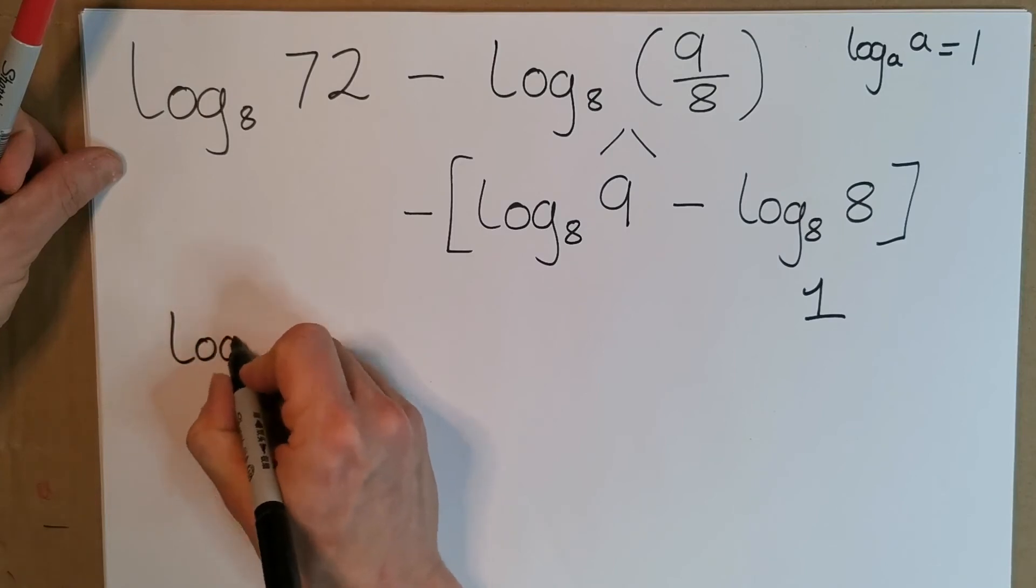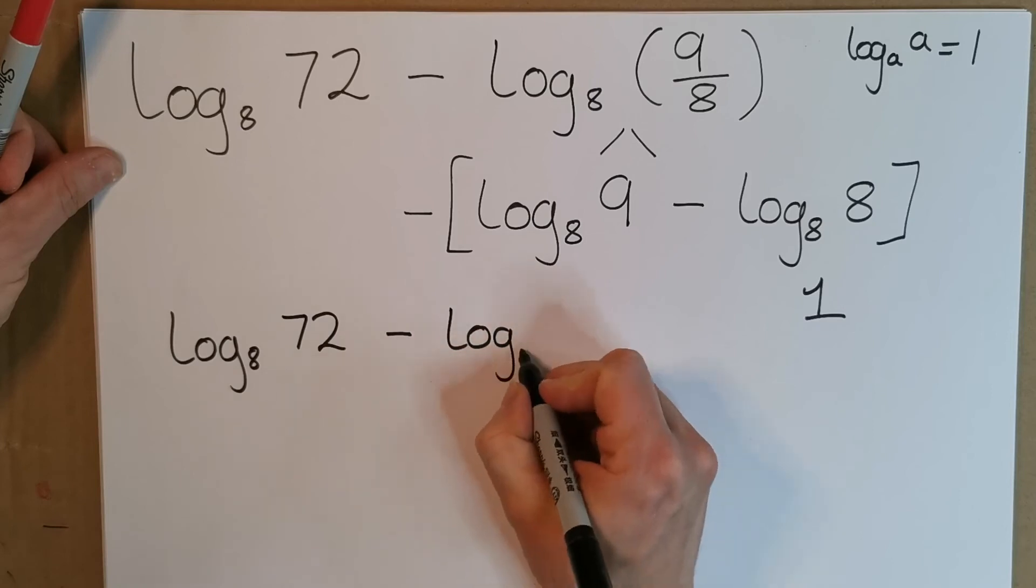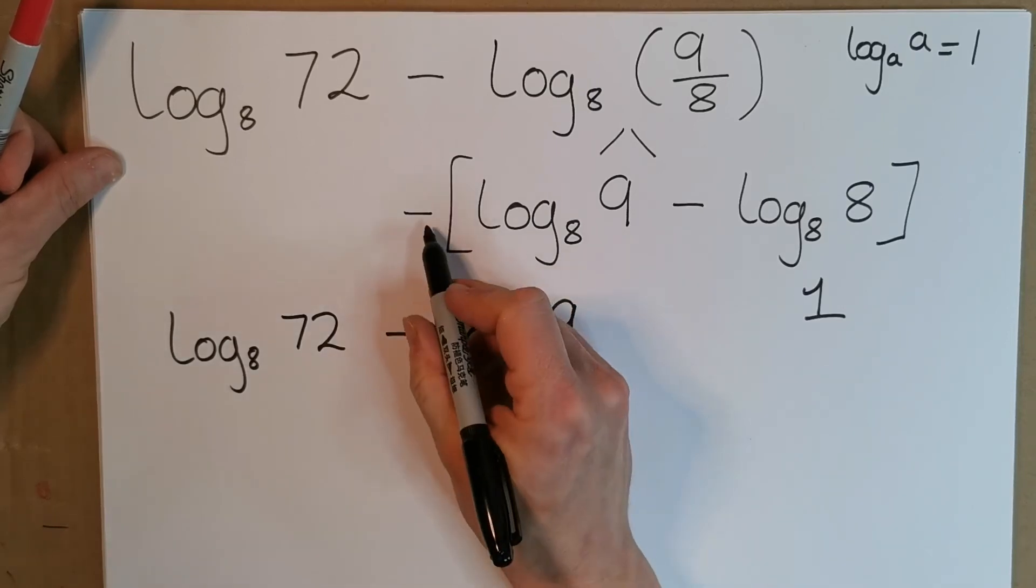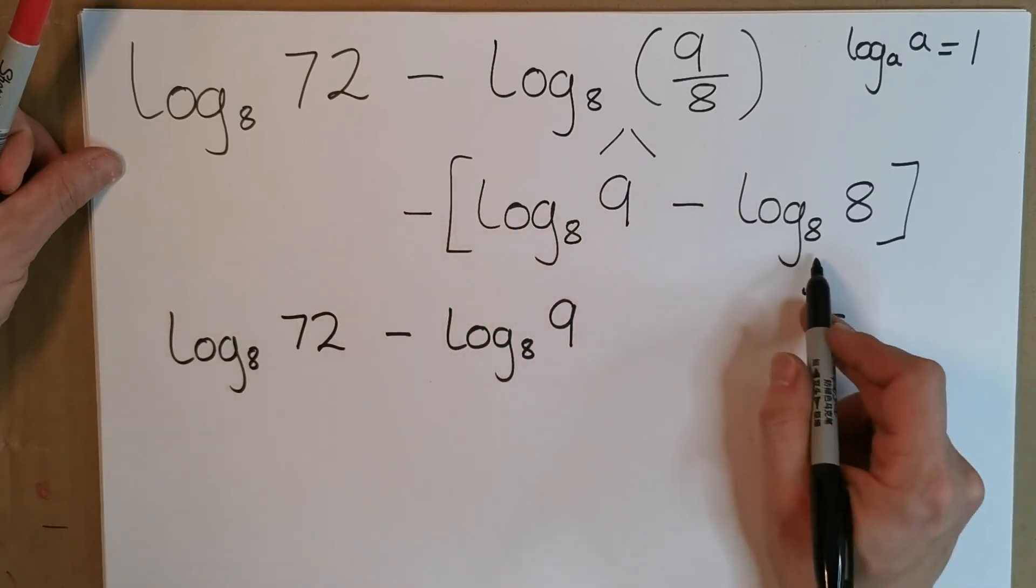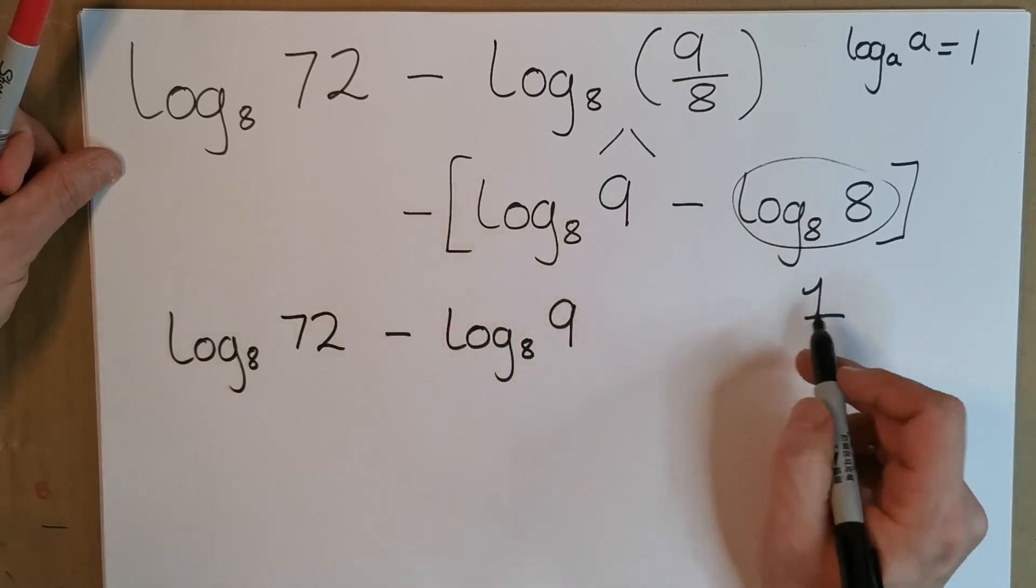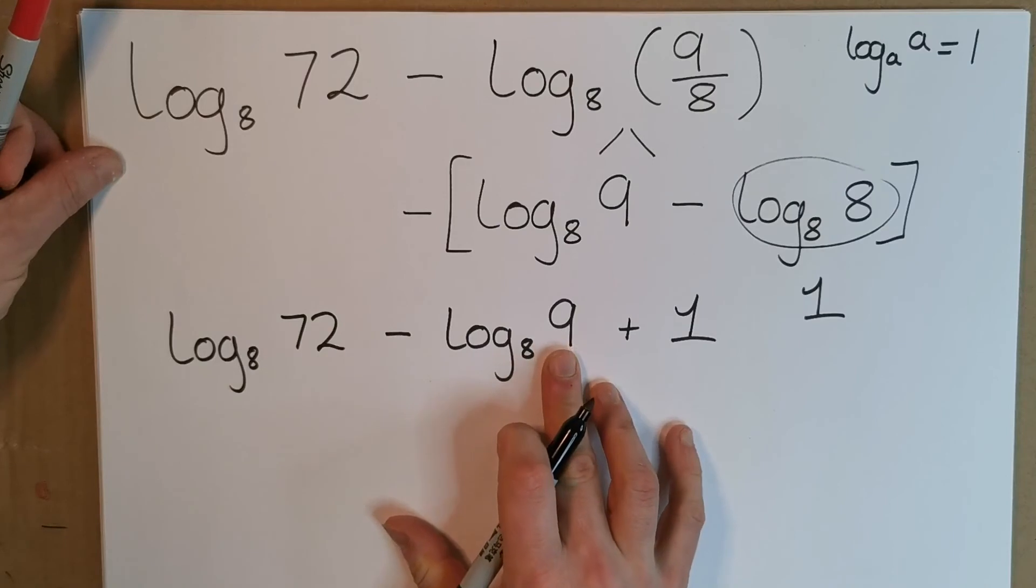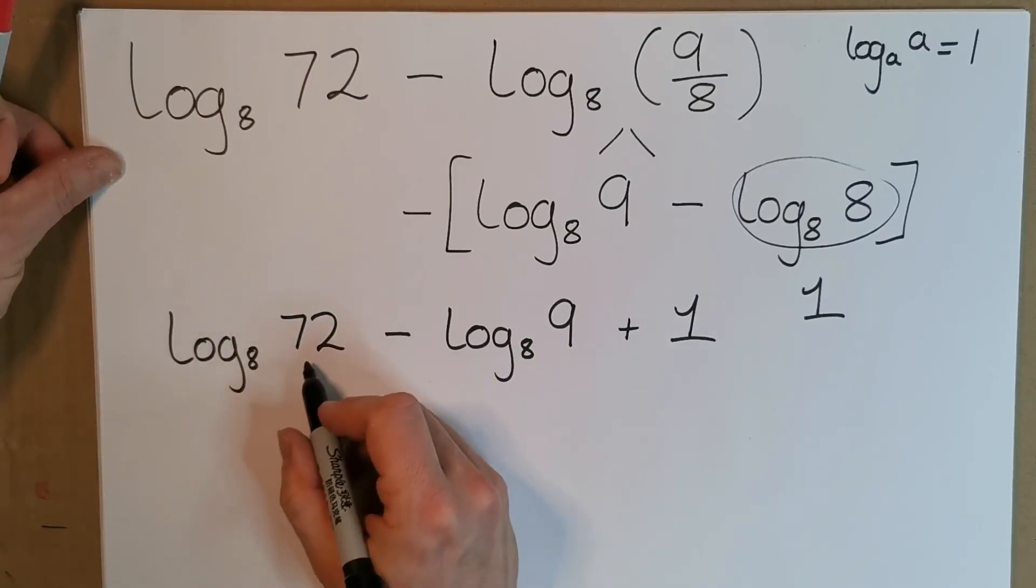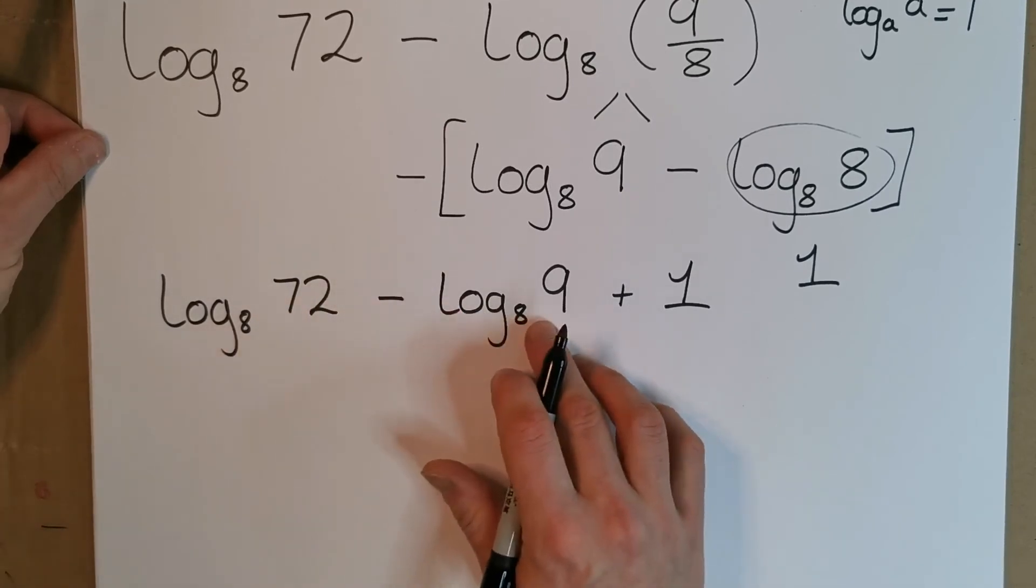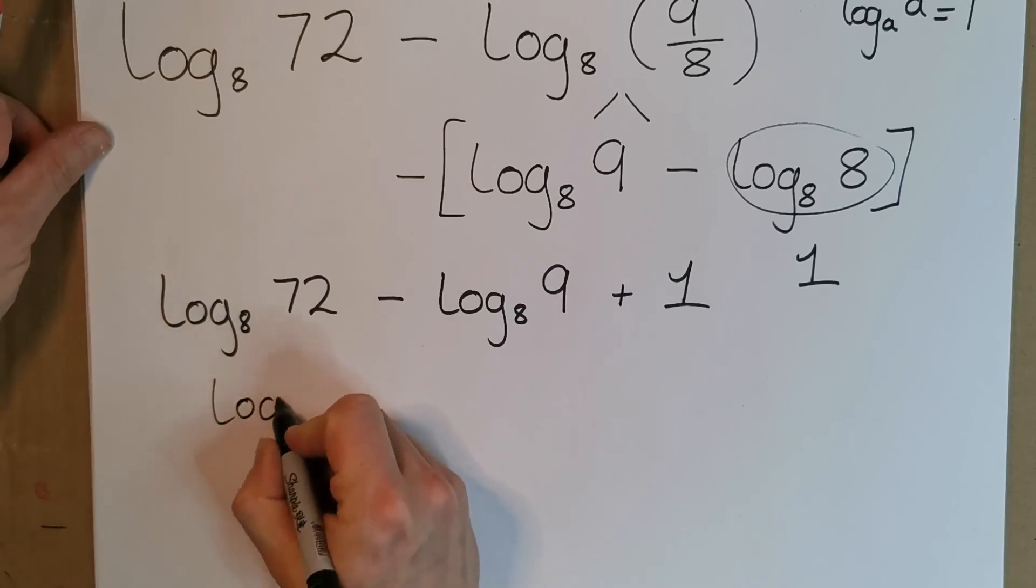I'm left with log base 8 of 72 minus log base 8 of 9. Now I have a minus by a minus here. This is 1, but it's actually minus that, so minus 1. A minus by a minus gives us a plus on the outside. Now I have to look at these two. This is a subtraction, so log base 8 of 72 minus log base 8 of 9. They don't seem to go easier, so let's use the rule.